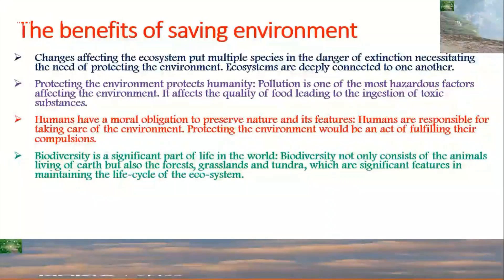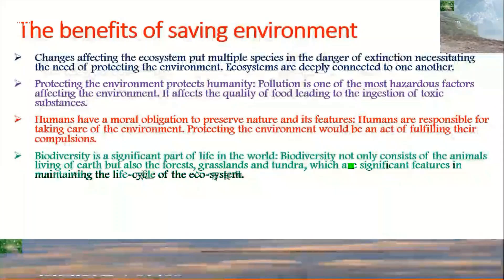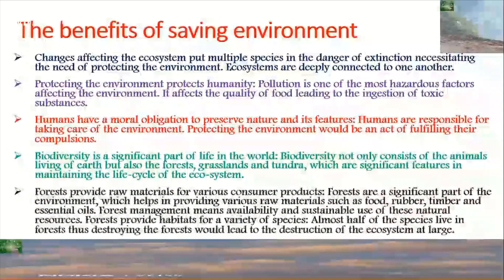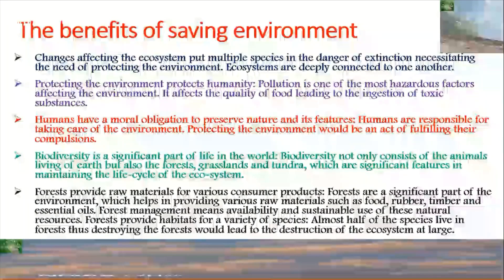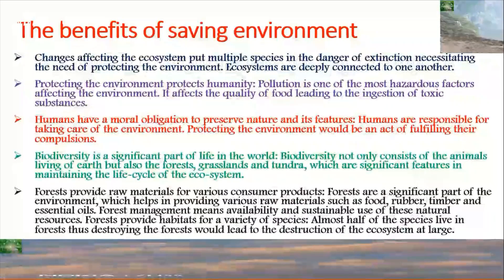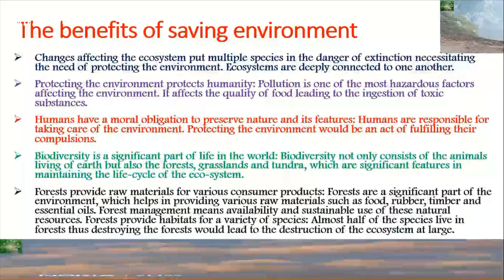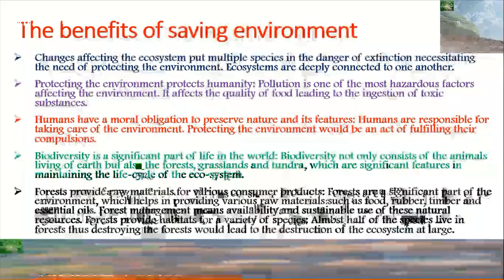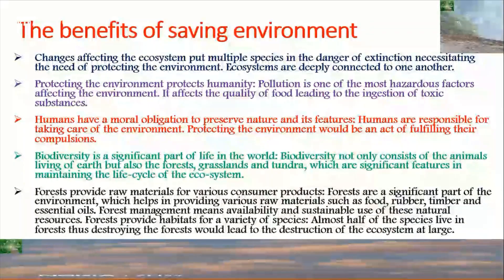Biodiversity is a significant part of life in the world. Biodiversity not only consists of animals living on the earth, but also forests, grasslands, and tundra, which are significant features of maintaining the life cycle of the ecosystem. Forests provide raw materials for various consumer products such as food, rubber, timber, and essential oils. Forest management means availability and sustainable use of these natural resources. Almost half of the species live in forests, and thus destroying the forest would lead to the destruction of the ecosystem at large.